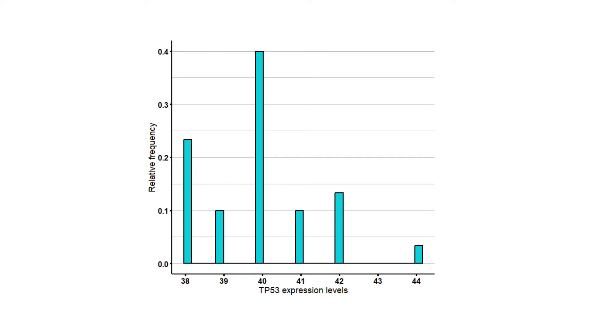The x-axis shows the data value, TP53 expression, and the y-axis shows the relative frequency. For example, the value 40 occurs 12 times out of 30 total values in the data set, so it has a relative frequency of 40% or 0.4.